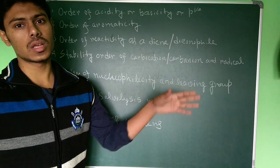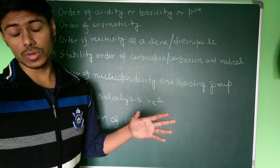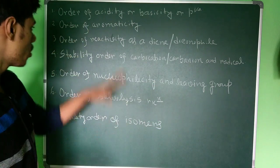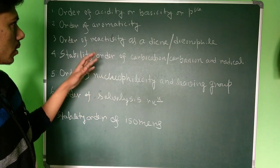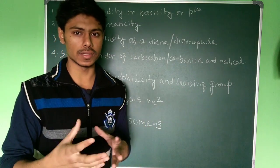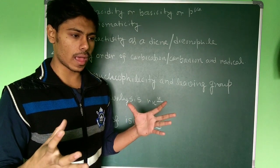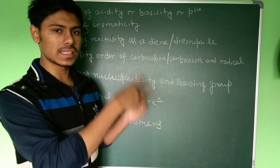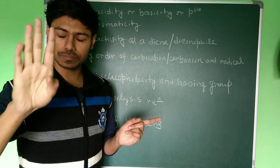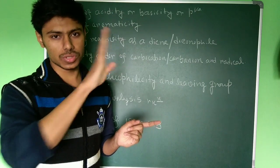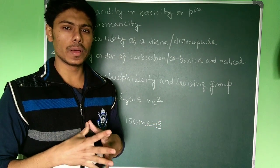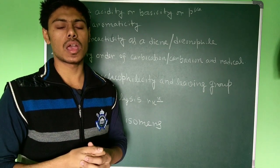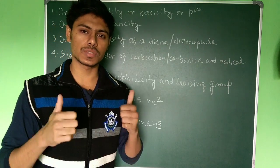There will be questions where they will give you two or three compounds which are different isomers of the same compound and you have to compare their stability. This is again very important. These seven topics are basically the order of different properties, and one or two questions are guaranteed from this. If you practice these, you will have a great chance of getting questions from there. I hope this video will help you in your preparation for GATE and JAM exam. Thank you for watching and if you're new to this channel, subscribe to my channel.